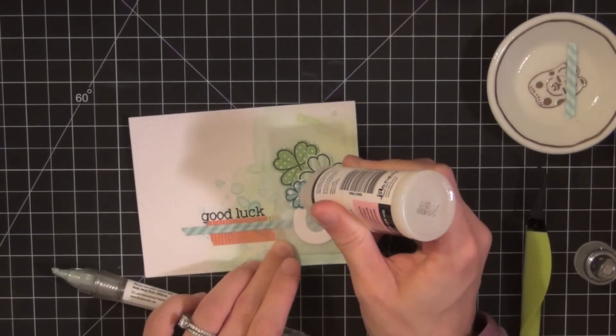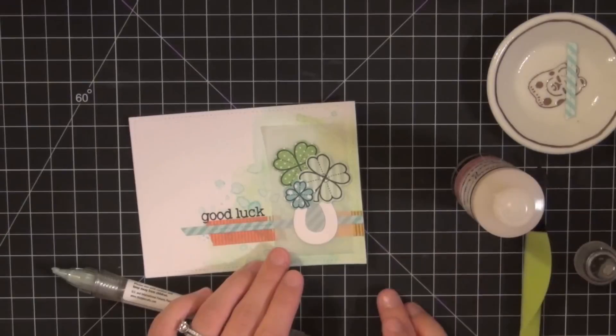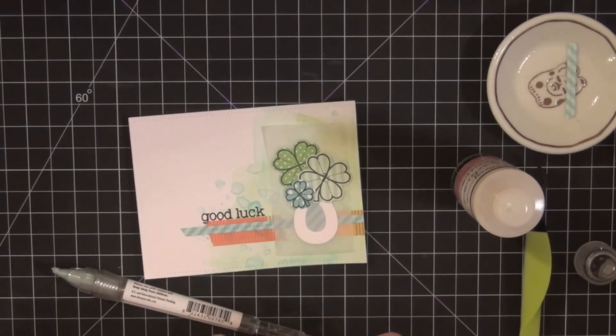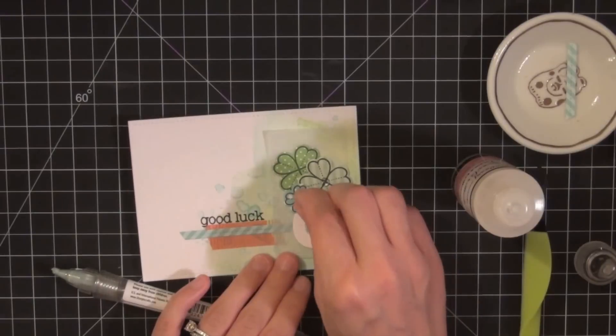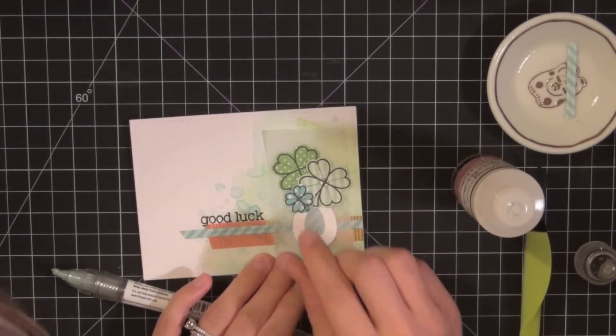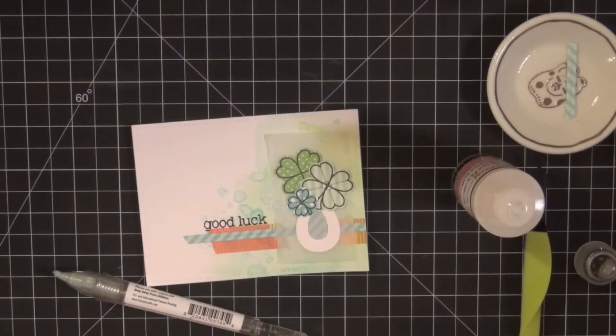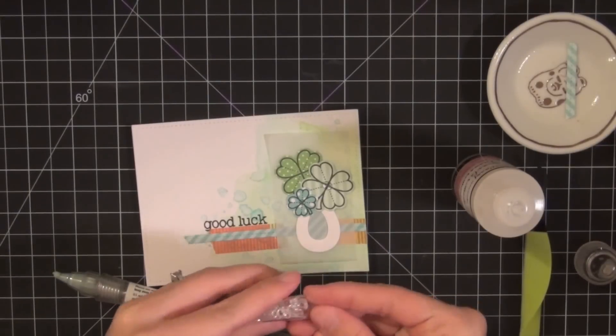And then for just a few finishing touches, I'm going to add these clear rhinestones in the middle of the clovers just so they look a little bit more like flowers. Just adhering them with some glossy accents.